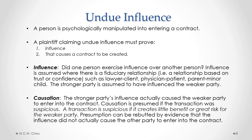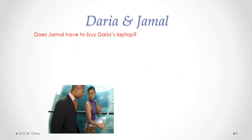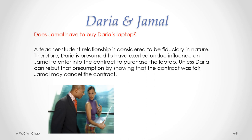The second requirement is causation. The stronger party's influence needs to have actually caused the weaker party to enter into the contract. Causation is presumed if the transaction was considered to be suspicious. A transaction is suspicious if it creates little benefit or great risk for the weaker party. That presumption can be rebutted by evidence that the influence did not actually cause the other party to enter into the contract. A teacher-student relationship is recognized to be fiduciary in nature. Therefore, Daria is presumed to have exerted undue influence on Jamal. Unless Daria can rebut that presumption by showing that the contract was fair, Jamal may cancel the contract.